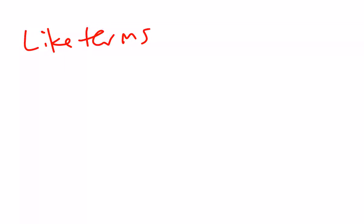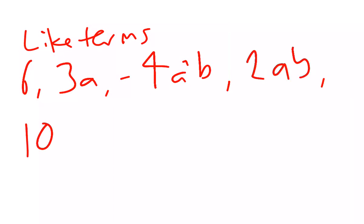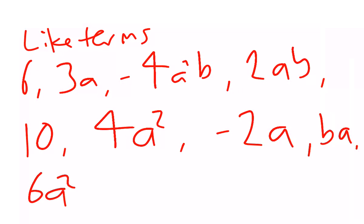For example, if we have this set of numbers: 6, 3a, negative 4a squared b, 2ab, 10, 4a squared, negative 2a, ba, 6a squared b squared, and let's have 3a squared b. Some of these are like terms.